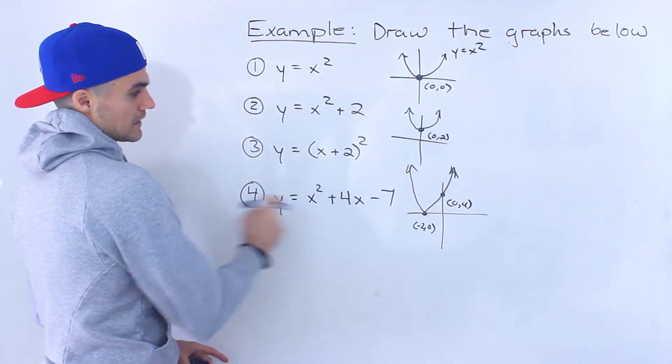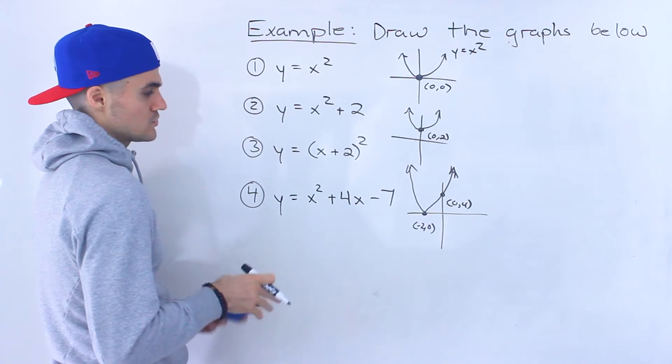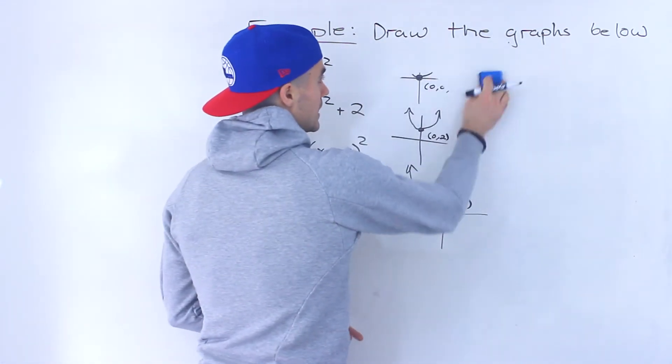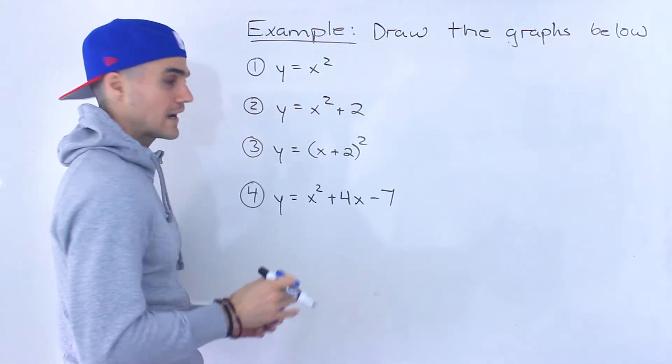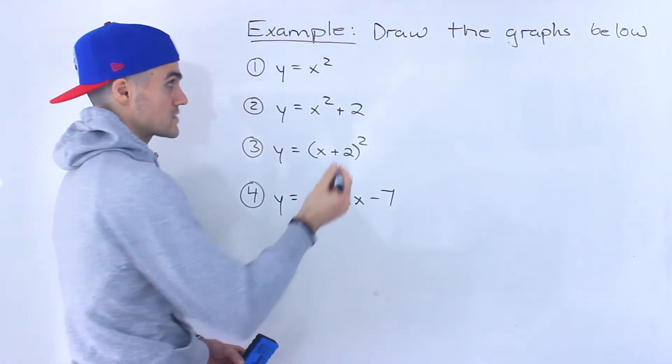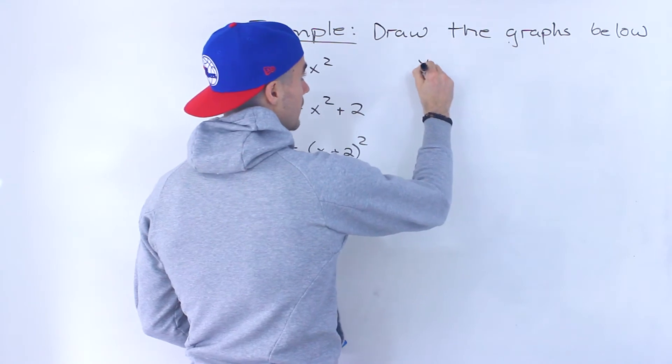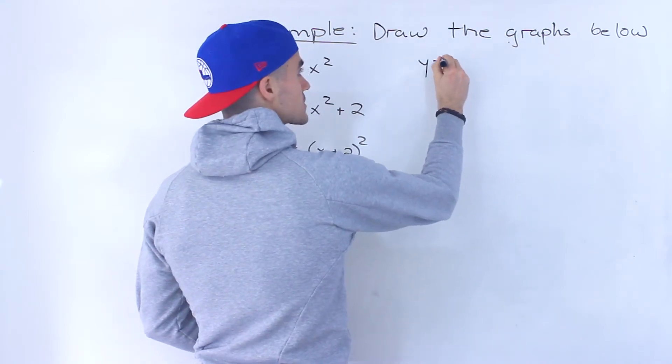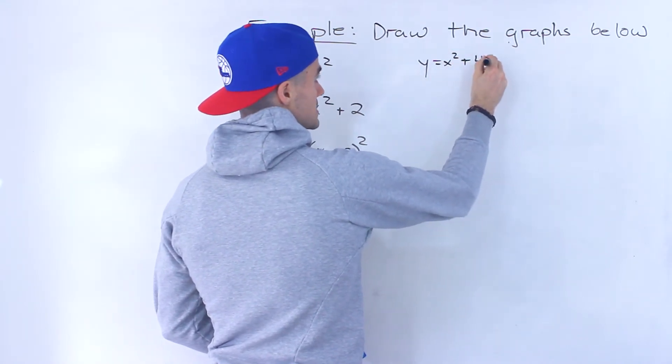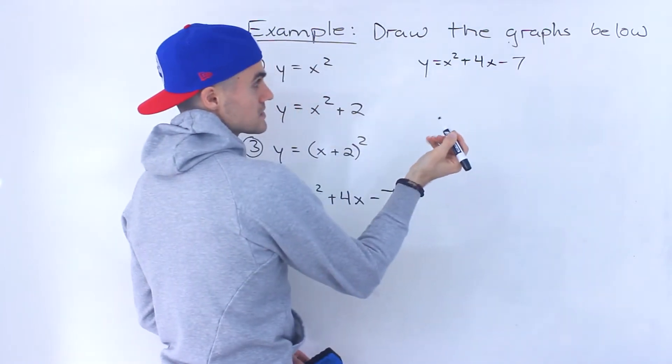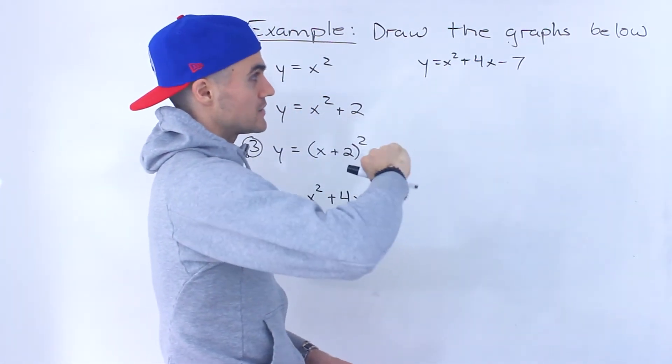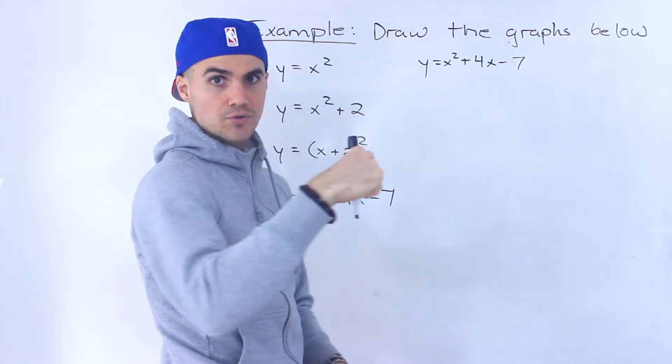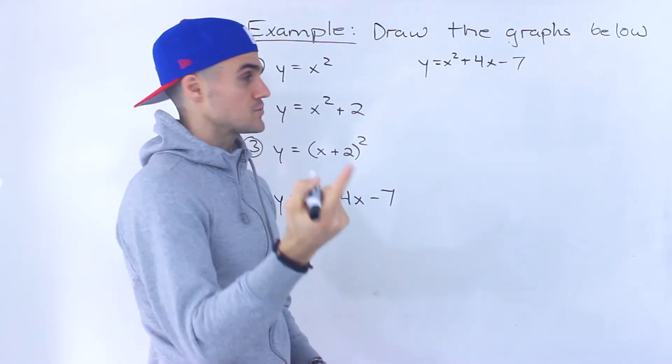Now this one is a little bit trickier to deal with because notice it's not in that nice transformation form. It's not in vertex form. So we can actually put it in vertex form. Let's actually do that. So we'll have x squared plus four x minus seven. So we would complete the square on this. We'd have to take that b value divided by two and square it. So four divided by two is two, to the power of two is four.